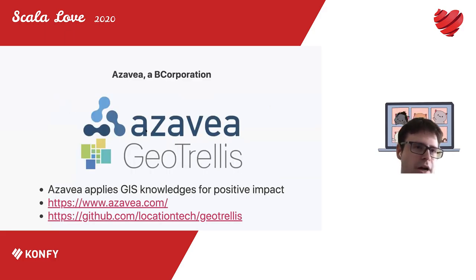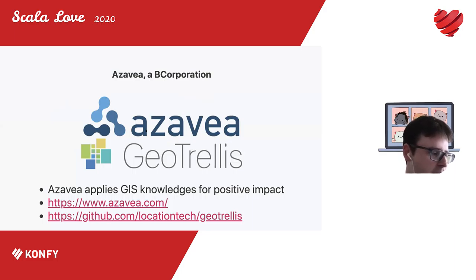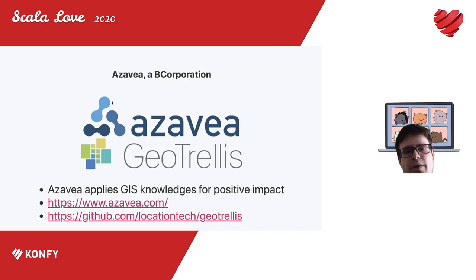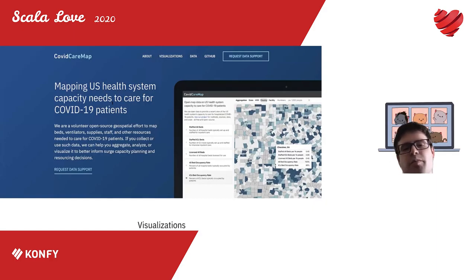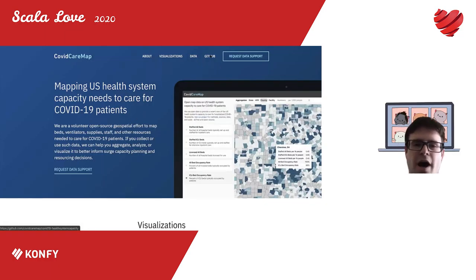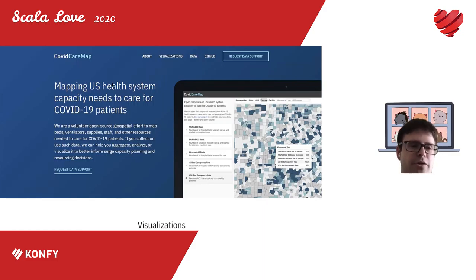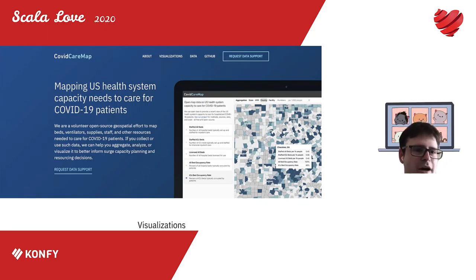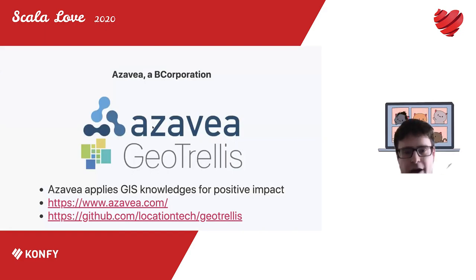A couple of words about me: I work as an open source software engineer at Azavea, a B corporation that applies GIS analysis software and research for positive social and environmental impact. We are also helping to build a COVID care map — a small project that maps health system capacity needs. Because it is an open source project, you can contribute on GitHub, and if you're interested or need help processing data, you can reach out to us.